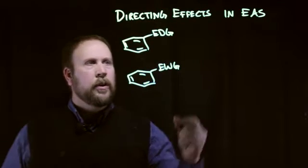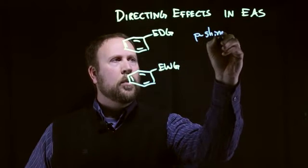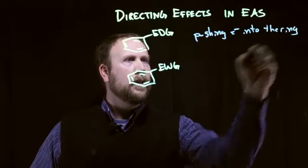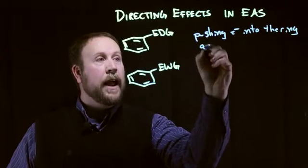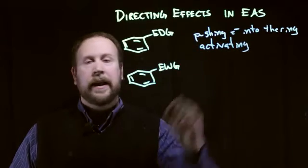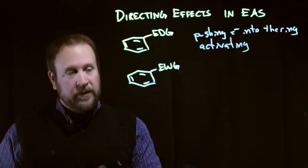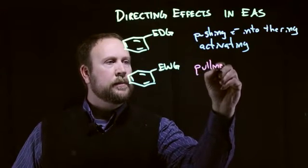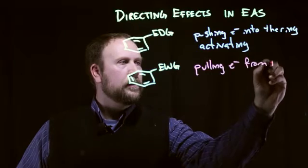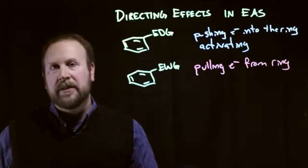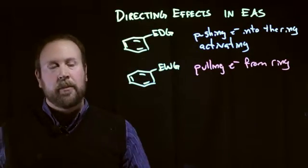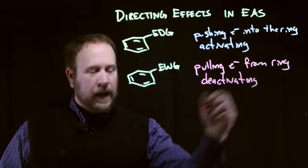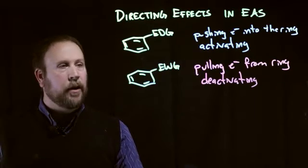In an electron-donating group, we're pushing electrons into the ring — another way to think about this is we are activating that aromatic system. In the case of an electron-withdrawing group, we're pulling electrons away from the ring, which is deactivating or making that ring less reactive. This is going to have an impact on the regiochemistry of our reaction.